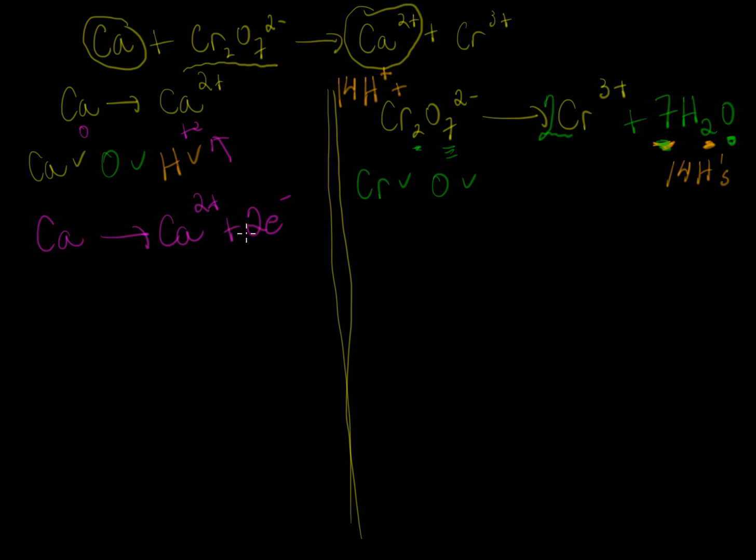Over here the charge might be a little bit harder to figure out. Each H+ is +1 in charge, but we have 14 of them, so 14 times +1 is +14. Dichromate polyatomic ion has a charge of -2, so the total charge on the left here is +12. On the right we have 2 times +3 is +6, and we have 7 times 0—the charge of water is 0—so the total charge here is +6.